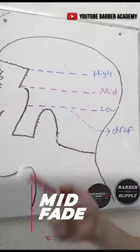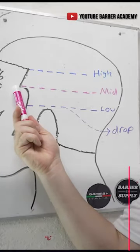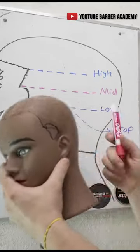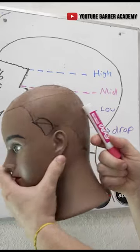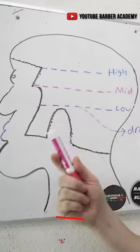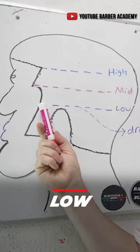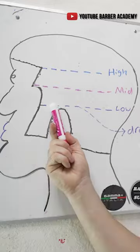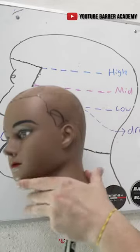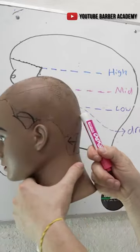For the mid fade, it's pretty simple. We'll take it from the top of the C cup and we're just going to keep it even all the way around the head with no dropping. For the low fade, it can take place right on the top of the ear, and it can also go around perfectly straight in the back.